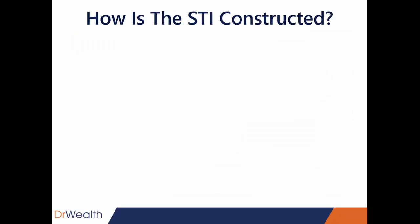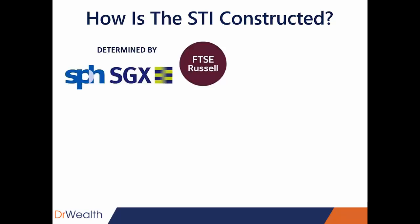The question is, how is the STI constructed? Who determines whether these 30 stocks are included? It's determined by three companies jointly: SPH (Singapore Press Holdings), SGX (Singapore Stock Exchange), and FTSE Russell, a UK indexing company that is internationally known. A little bit of history — it started in 1966, and it was the Straits Times that published this index in those days, which is why it was called the Straits Times Index. Over the years, they brought in more professional indexing companies like FTSE to take part in the methodology of compiling these indices.